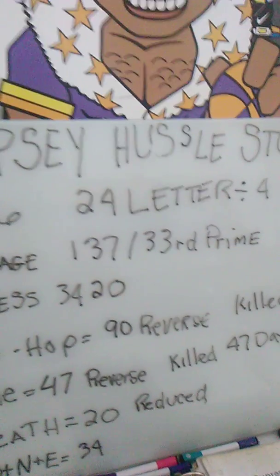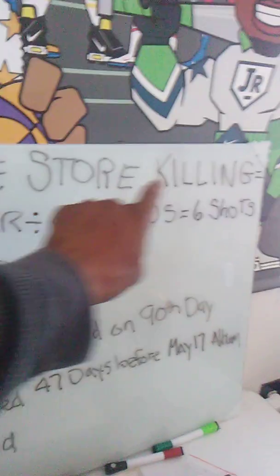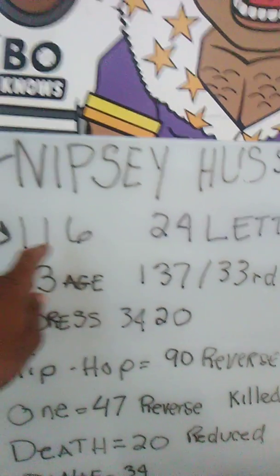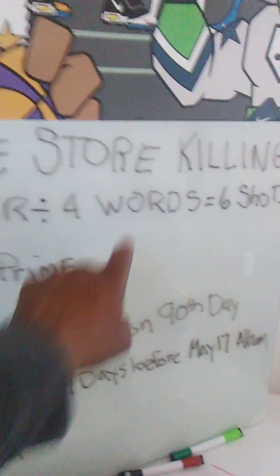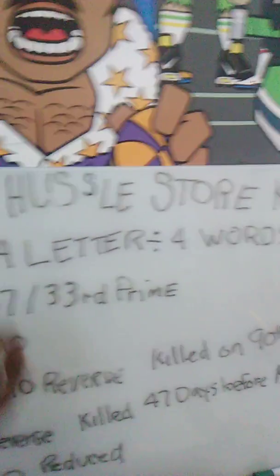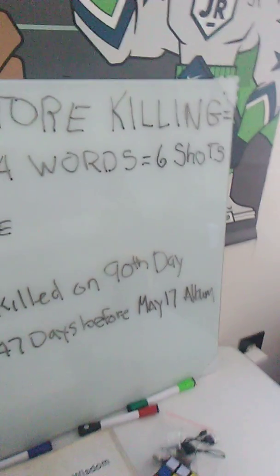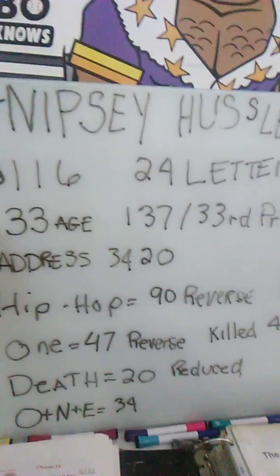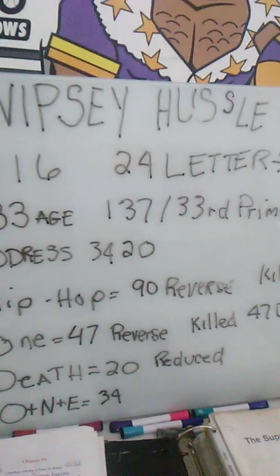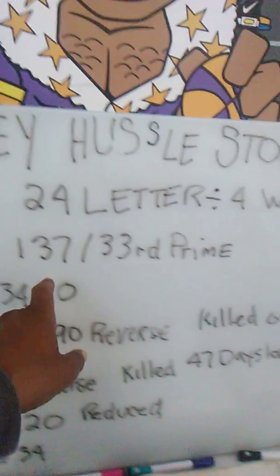We're talking about the Nipsey Hussle store killing, which adds up to 116. That's 24 letters with four words — divide 24 by 4, you get 6. Nipsey was hit with six shots. We're talking about a man who died at the age of 33, 228 days after his birthday and 137 days before his next birthday. 137 is the 33rd prime number. He was killed in the 3400 block — the address is 3420.